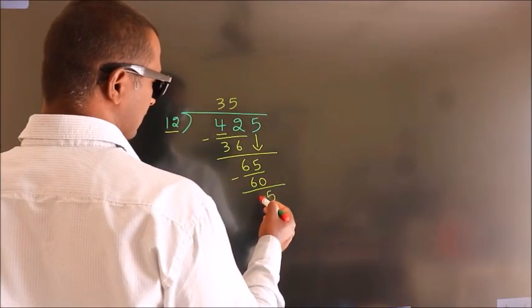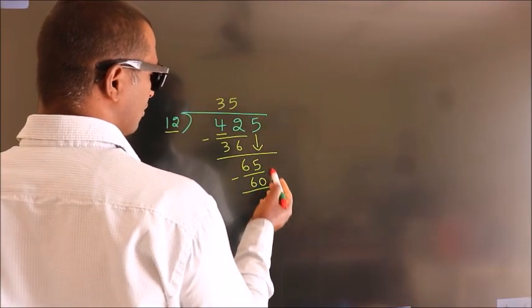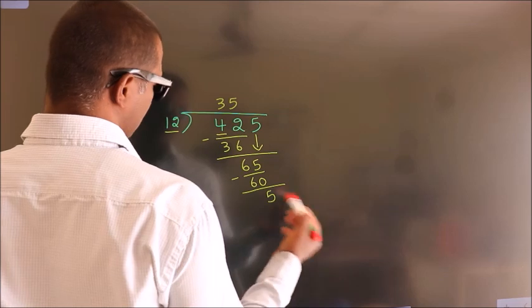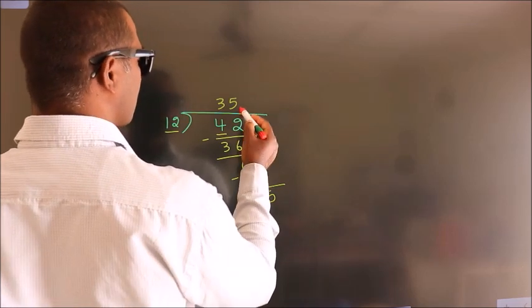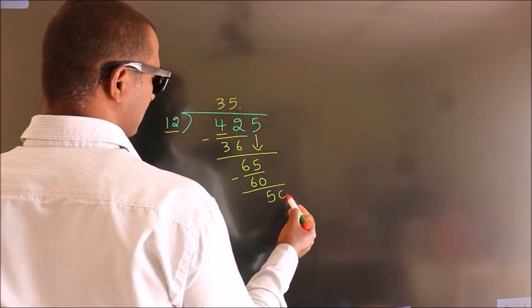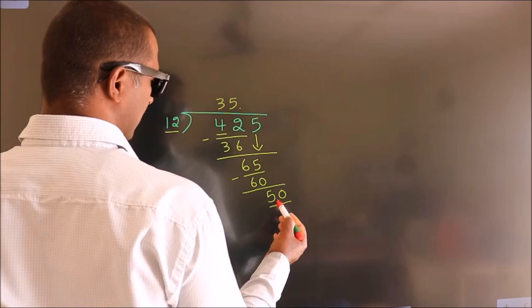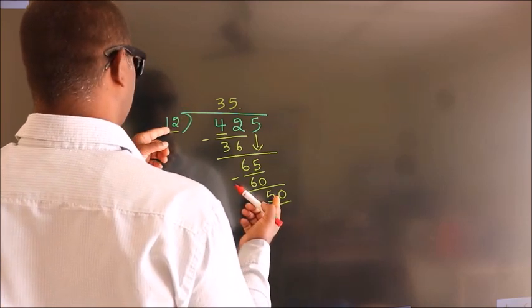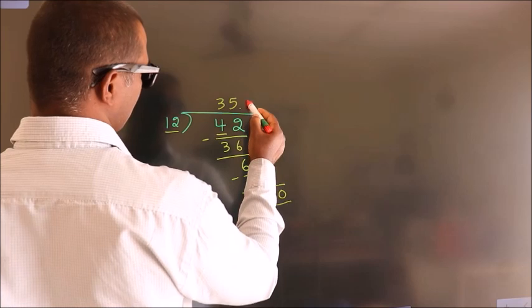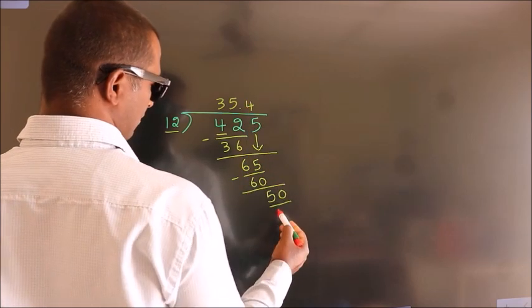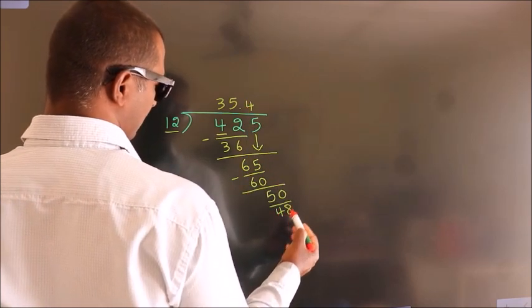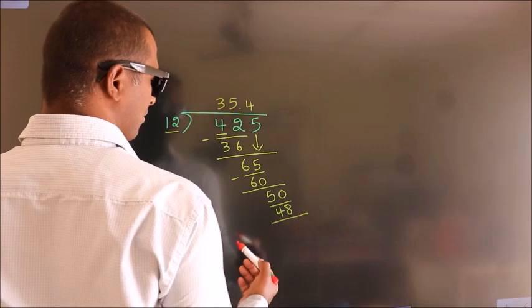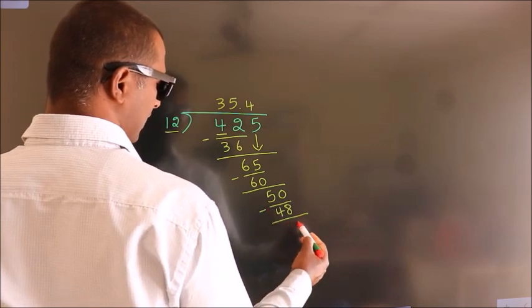After this, no more numbers to bring down. So what we do is put a dot and take 0, giving us 50. A number close to 50 in the 12 table is 12 fourths, 48. Now we subtract and get 2.